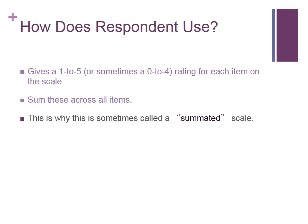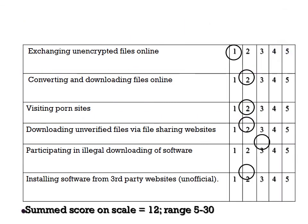A summated scale, or Likert scale, is a scale in which people respond using a 1-to-5 response scale, and the sum of the items represents the individual's standing on the construct of interest. For this six-item scale, a respondent's sum score of 12 (1+2+2+2+3+2) has a possible range from 5 — the minimum — all the way to 30, which is the maximum a person can get.